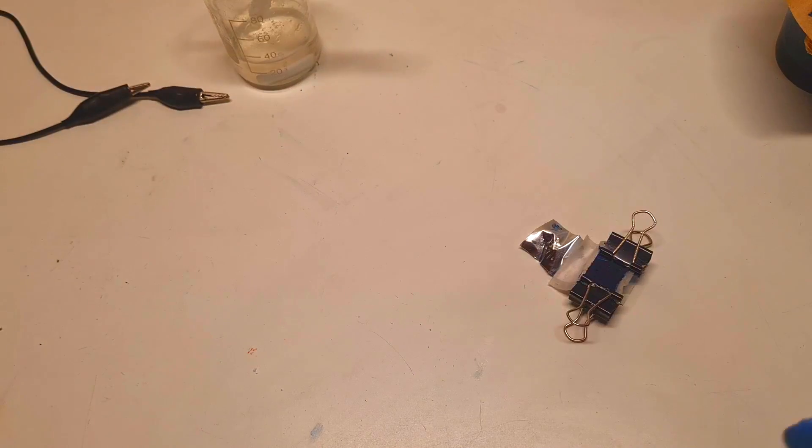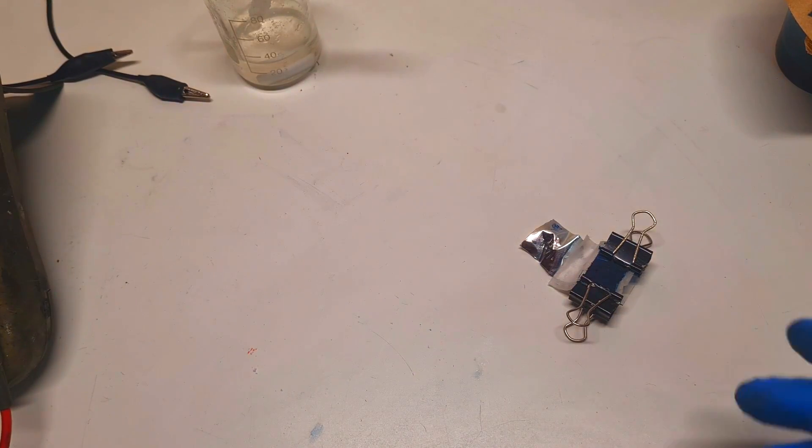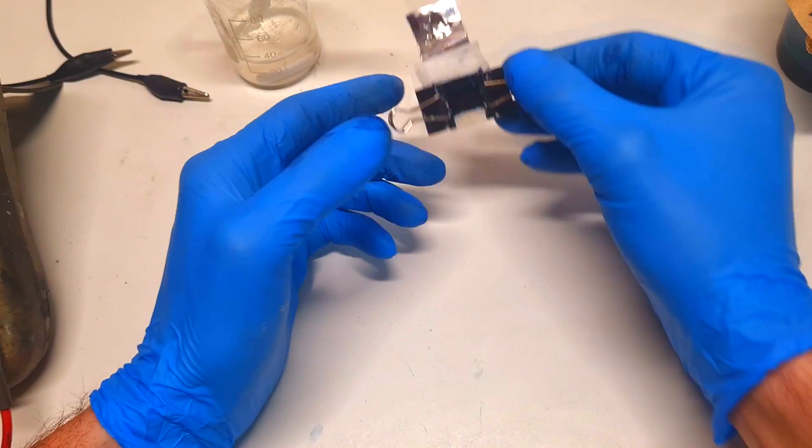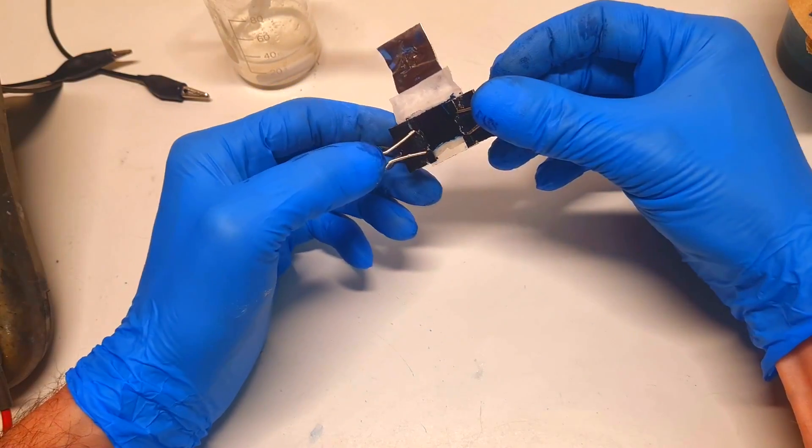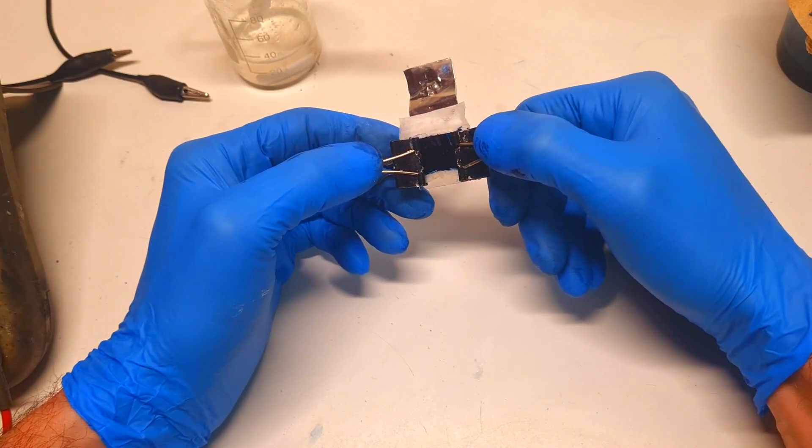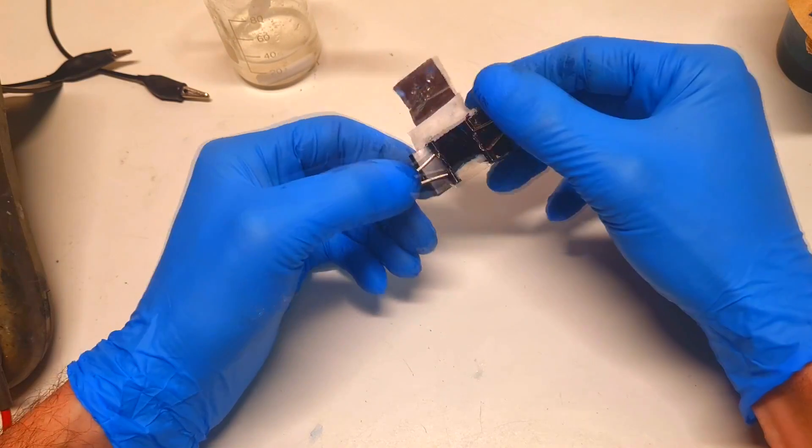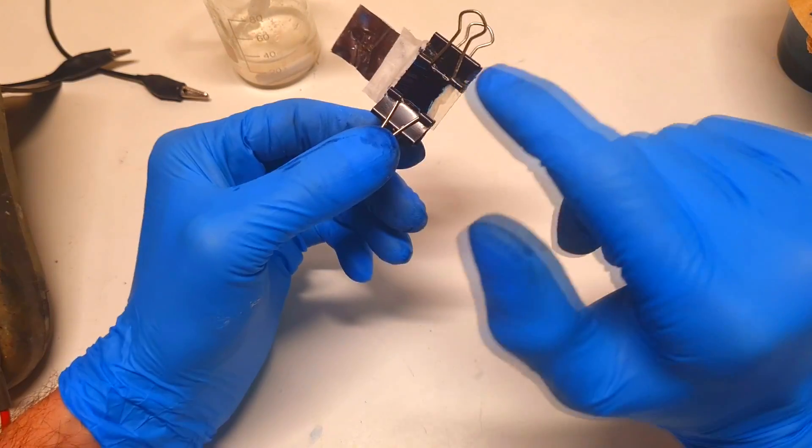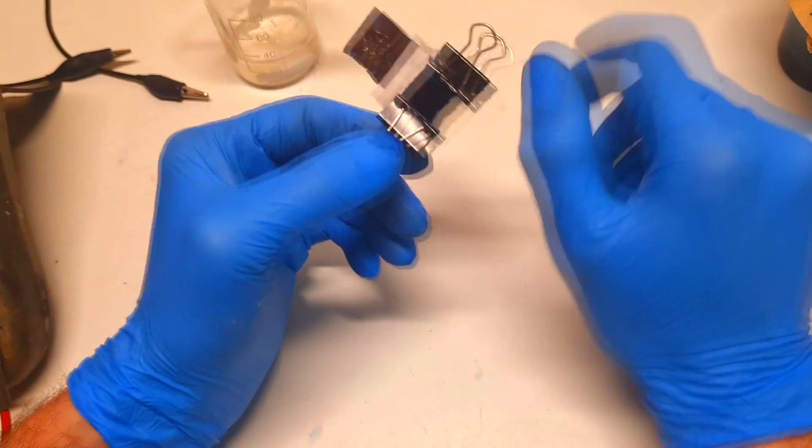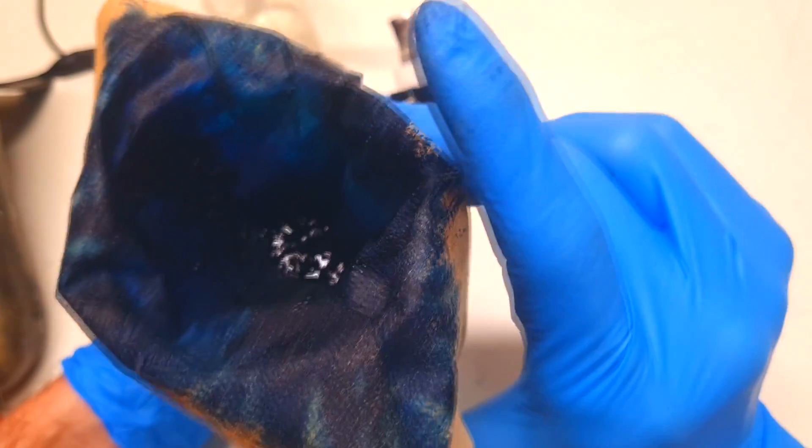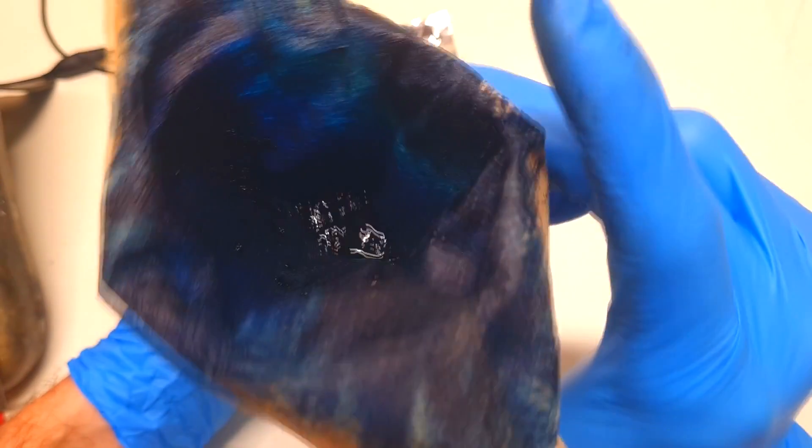And also, what is really important to know is that this Prussian blue was made when I mixed some potassium hexacyanoferrate solution with some iron sulfate solution, and then I washed the Prussian blue several times.